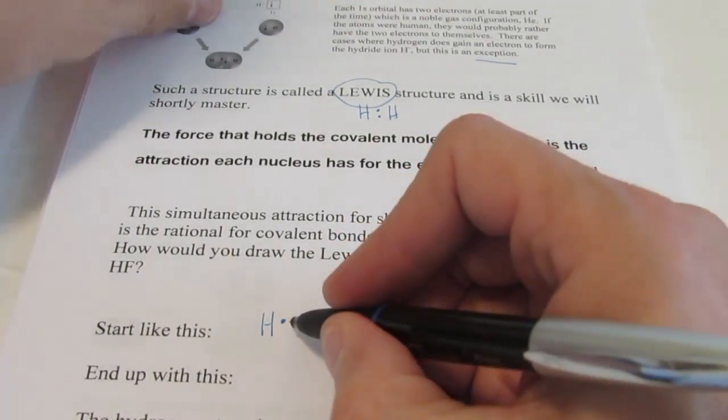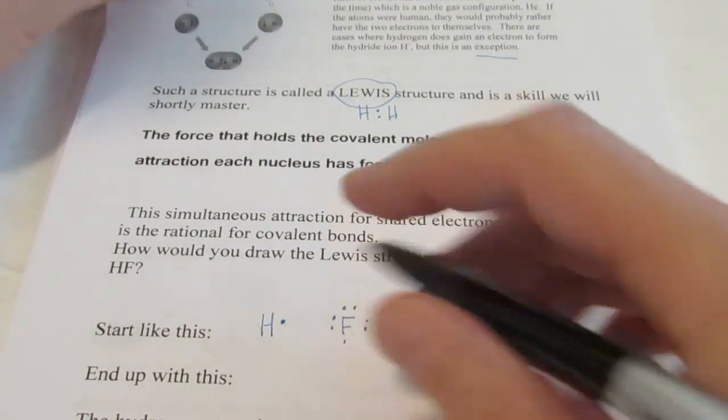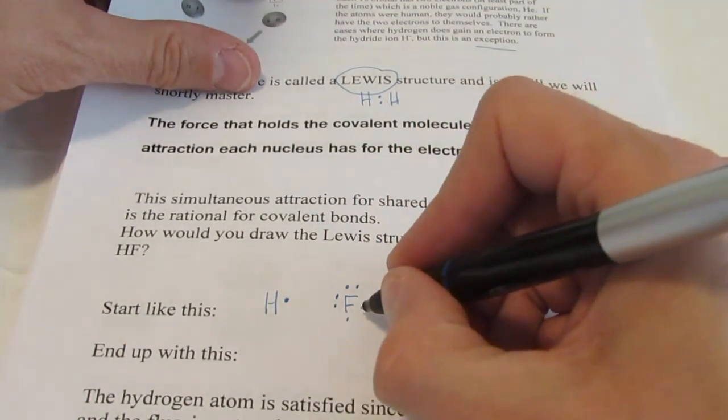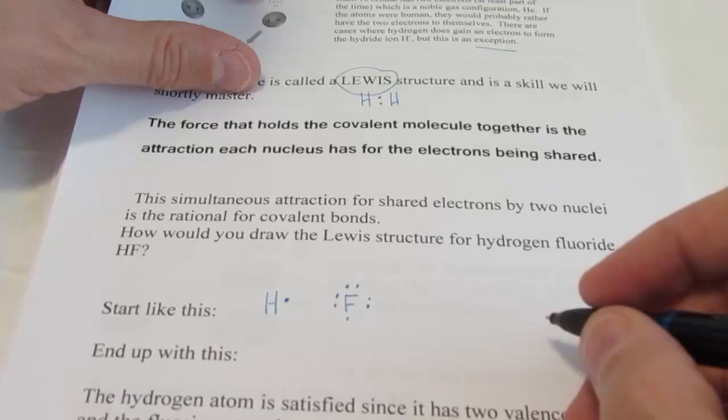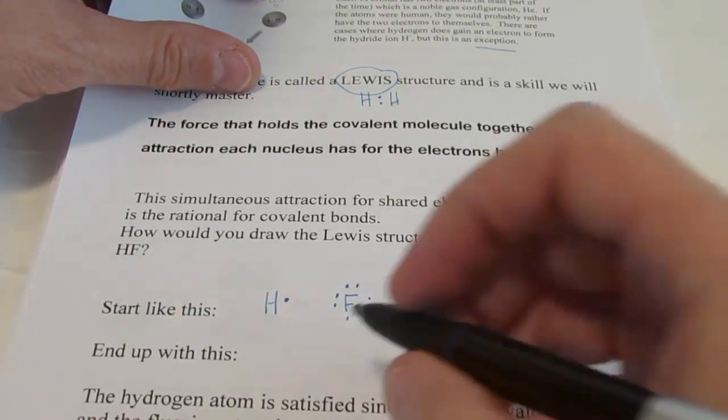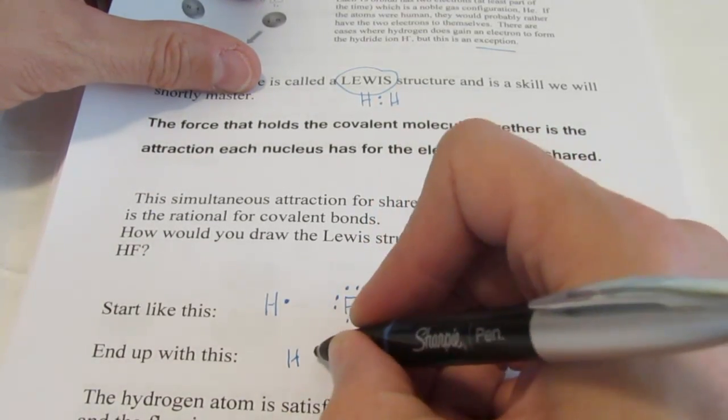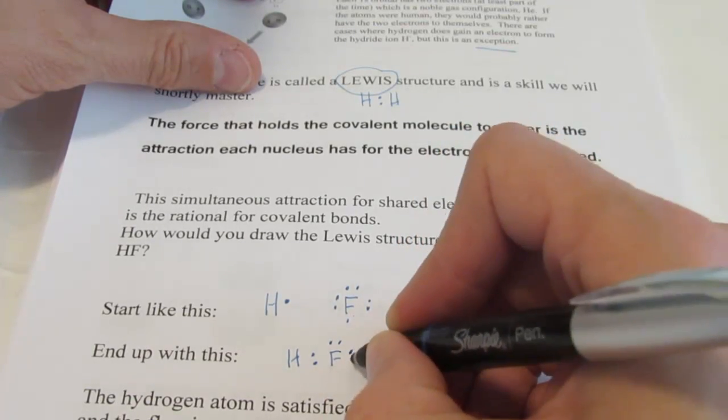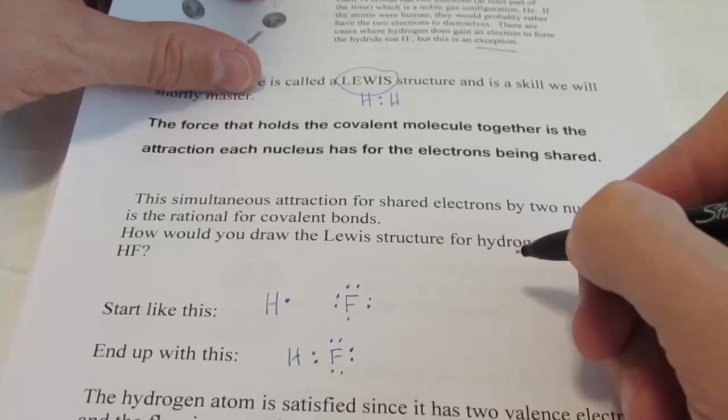We'd start like this. Hydrogen, in group 1, has one valence electron. Remember, if you're in group 1, you have one valence electron. Fluorine is in group 17. It's a halogen. It has seven valence electrons.